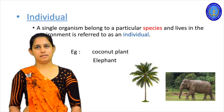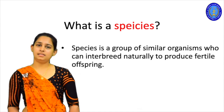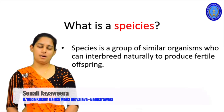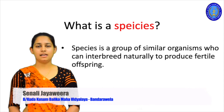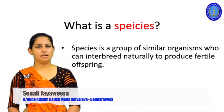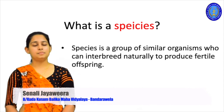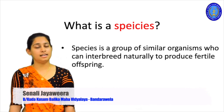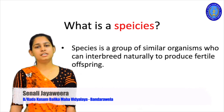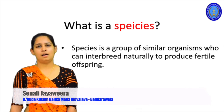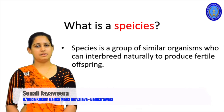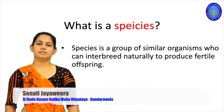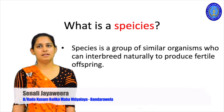Then what is a species? This word is very important. A species is a group of similar organisms who can interbreed naturally to produce a fertile offspring. These are similar types of organisms that can interbreed naturally to produce a fertile offspring. A fertile offspring means that if one generation is produced, that generation also should have the ability to produce a new generation. That is called a species.